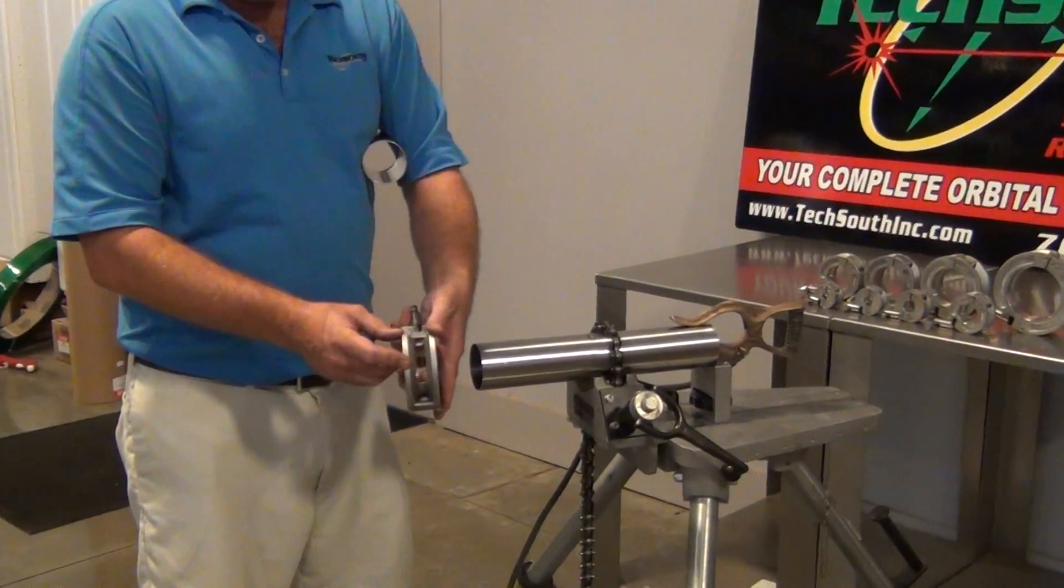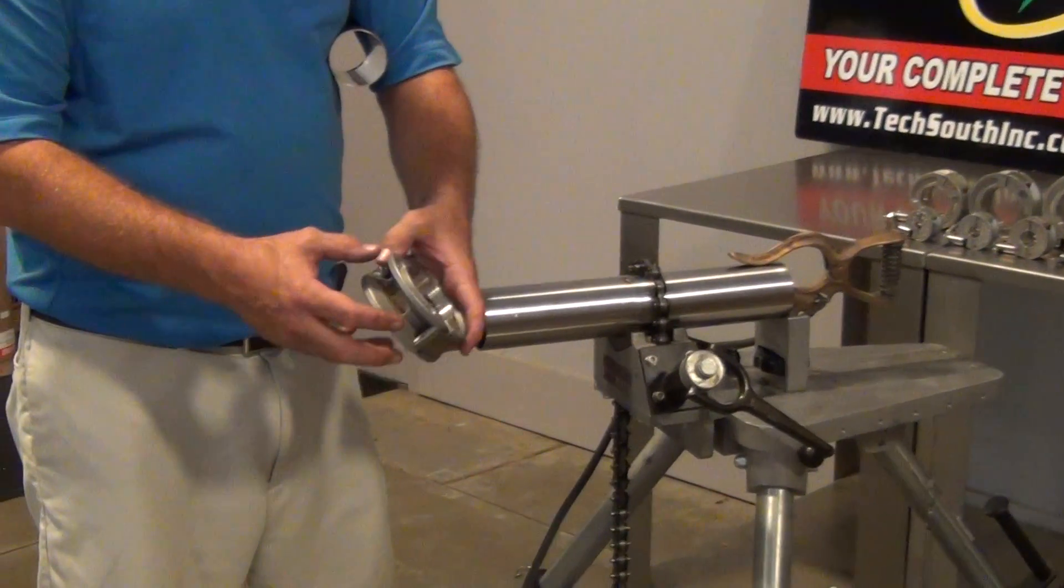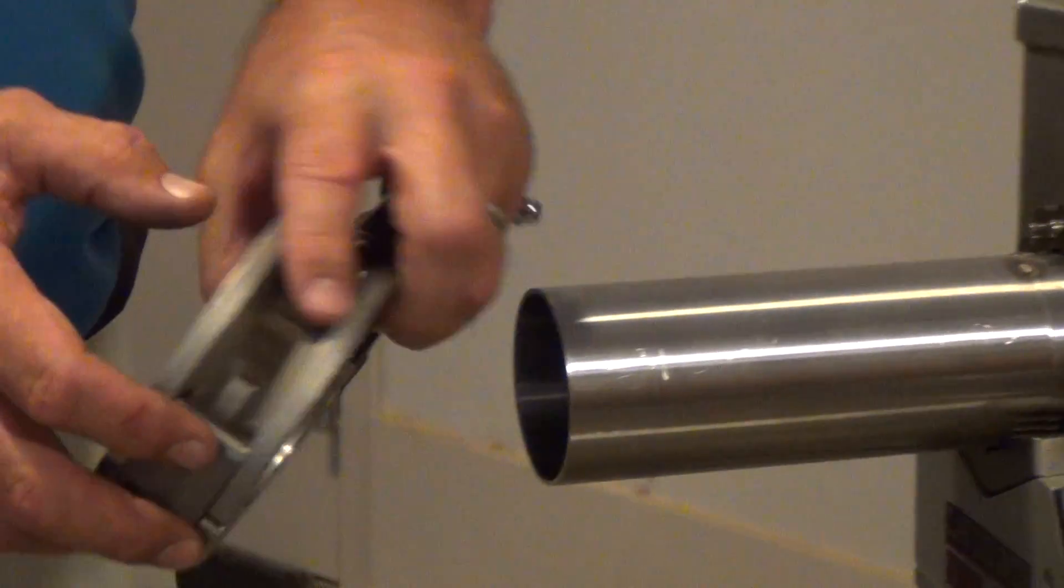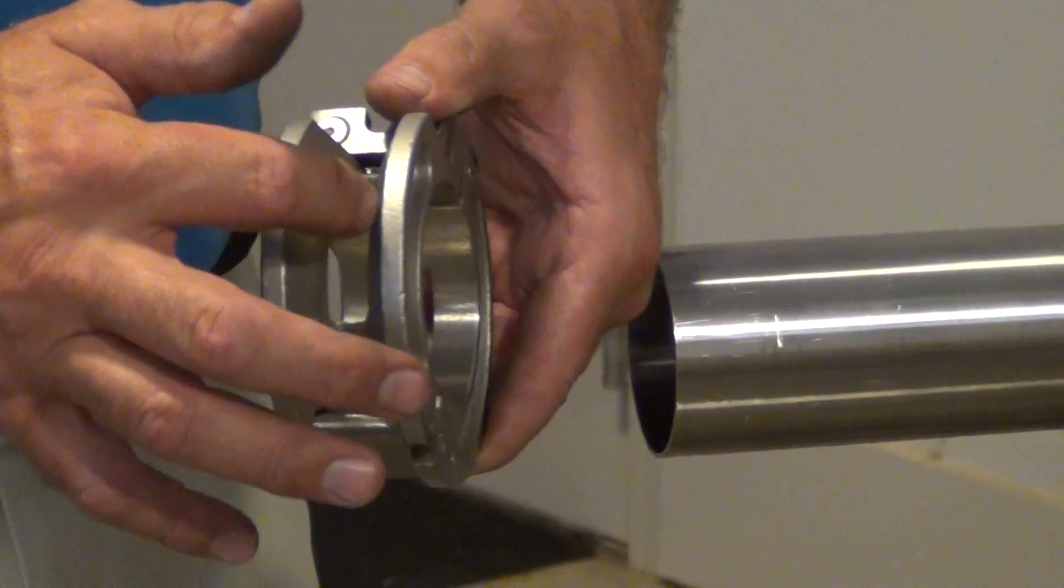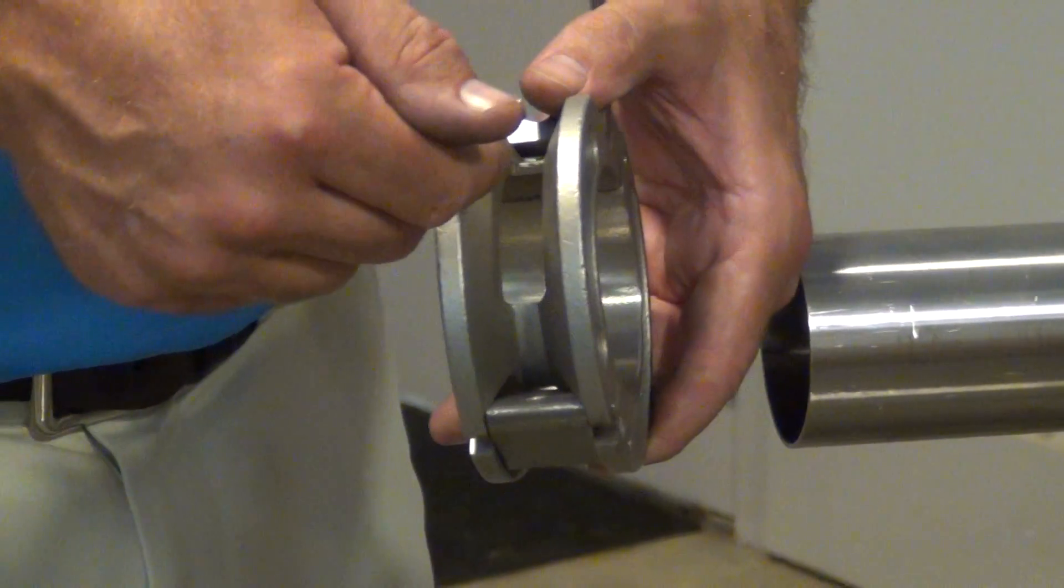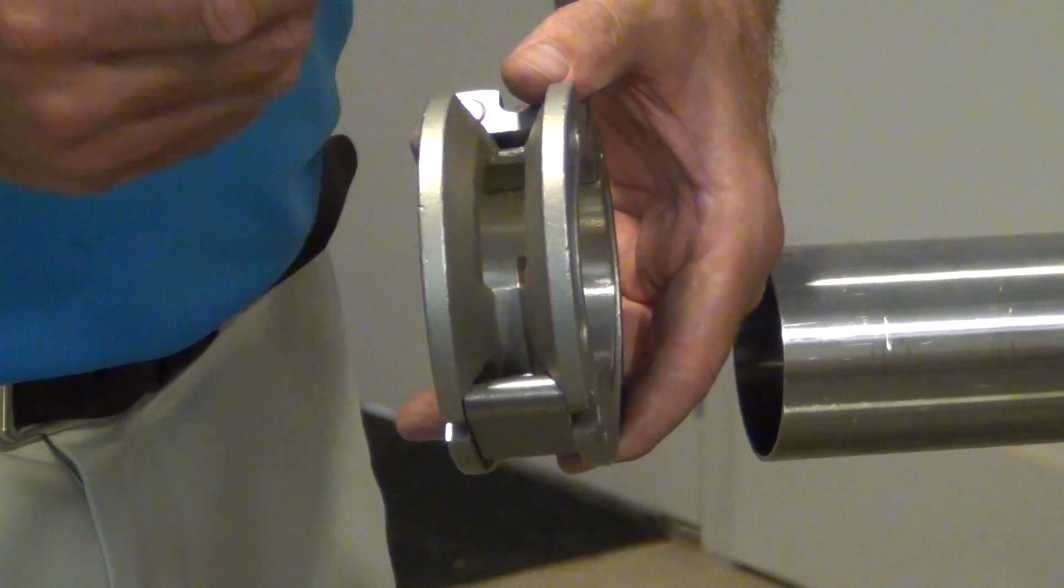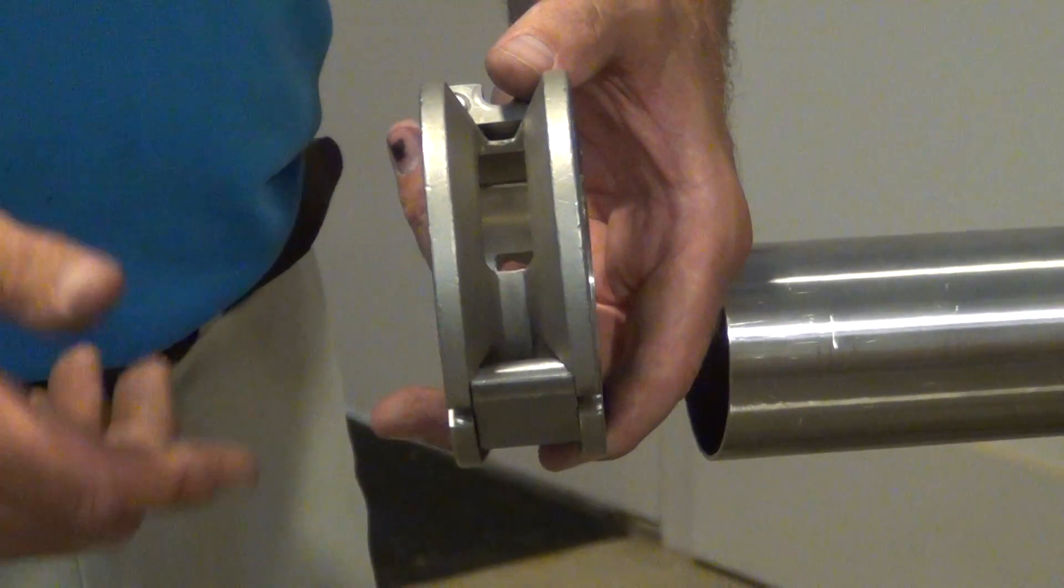You have a window here for tacking and then opposite you have another window for tacking. You also have tapered edges here where you can lay your cup right on the tapered edge and it makes it easy and keeps you at an equal distance for tacking.